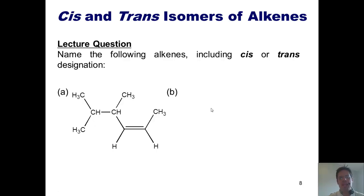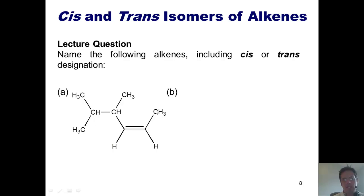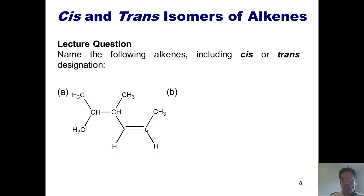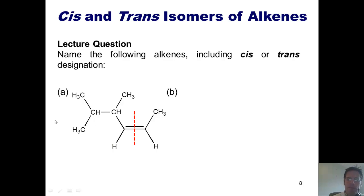Which brings us to a lecture question: name the following alkenes, including cis or trans designation. For this first one, I count the carbons in the longest chain in the direction that gives me the smallest number to my alkene — that ends up being right-to-left, giving me six carbons. So this is going to be a hexene, and numbering right-to-left, the double bond starts on carbon 2, making it a 2-hexene. To determine cis or trans, I draw a dotted line down the middle of the double bond and ask whether the two hydrogens are on the same side or opposite sides.